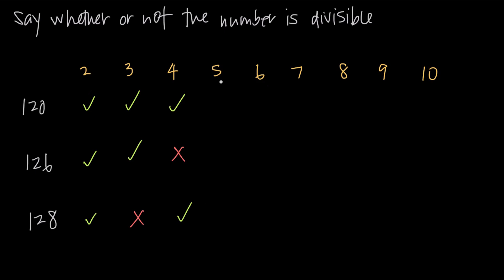Divisibility by 5 is an easy one. We're just looking for numbers that end in 0 or 5. So 120 is divisible by 5 because the last digit is 0, but 126 and 128 are not divisible by 5 because their last digits are 6 and 8, which are not 5 or 0.